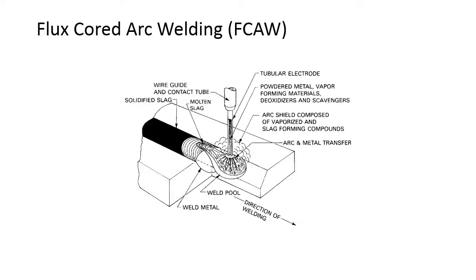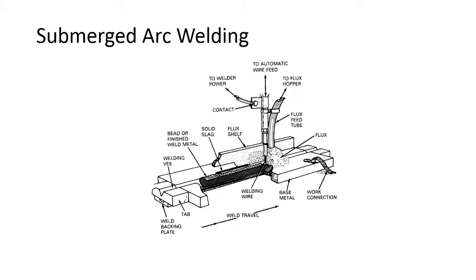Flux core arc welding looks similar to gas metal arc welding, but inside the wire there is a flux — similar to the flux on the outside of a shielded metal arc electrode. It's basically shielded metal arc welding turned inside out, with the filler metal turned into a wire. It uses pretty much the same equipment as GMAW. Flux core can be self-shielded or dual-shielded, where you have both a shielding gas and flux on the inside. Submerged arc welding uses a hard wire with flux dumped onto the weld from a tube, so the arc is completely buried under the flux. This one is also pre-qualified.